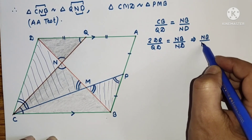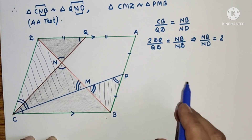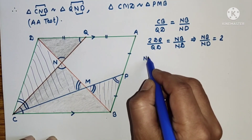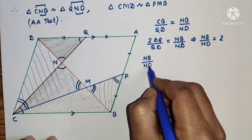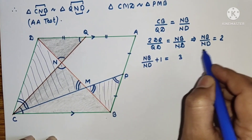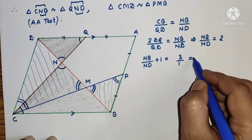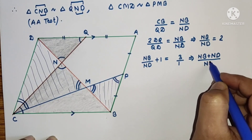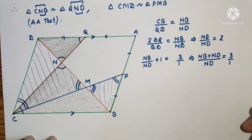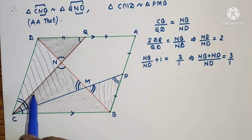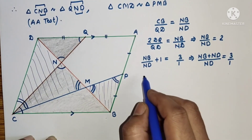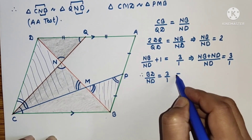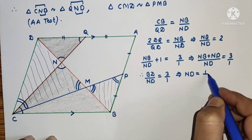So NB by ND equals 2. Adding 1 on both sides, NB by ND plus 1 equals 3, which gives us NB plus ND by ND equals 3 by 1. Since NB plus ND equals BD, we get BD by ND equals 3, and therefore ND equals one third of BD.